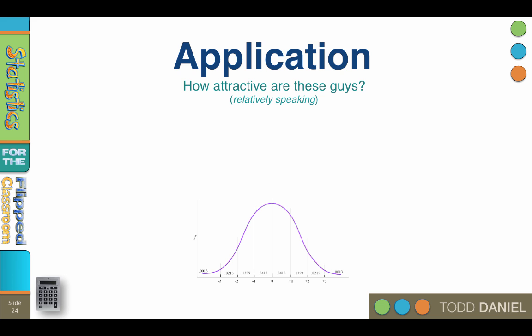So Shifty with his z of negative 2.50 is more attractive than 0.62% of all men. Not 62%, 0.62%, less than 1%.